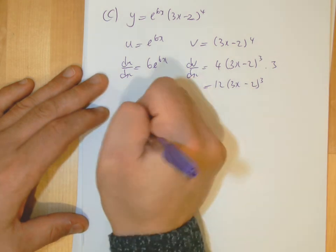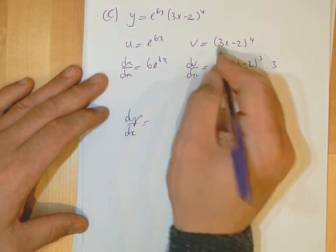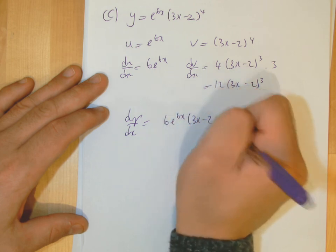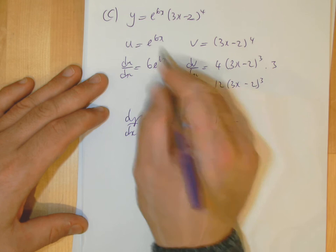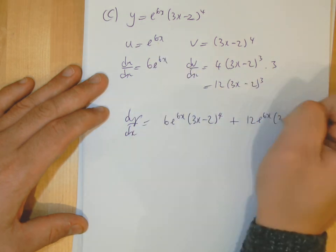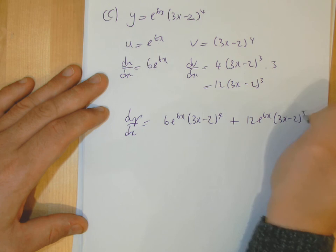So then the product rule then, this times this, add then u times dv/dx, this times this.